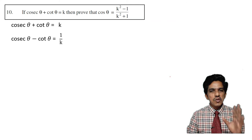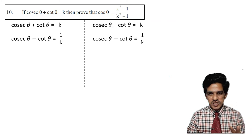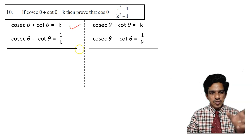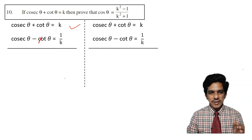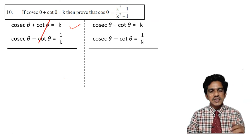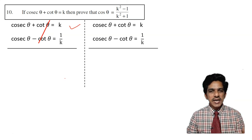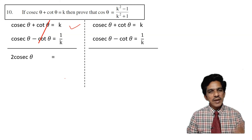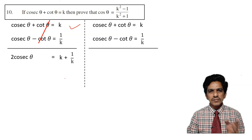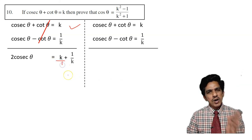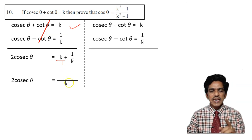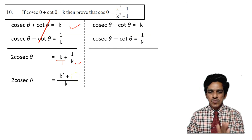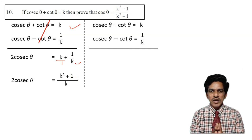We will use these two expressions by adding and subtracting them. When we add the two equations, plus cot theta and minus cot theta cancel, leaving cosecant theta plus cosecant theta, which is 2 cosecant theta. On the right side, k plus 1 by k, taking LCM as k, gives k square plus 1 over k. So 2 cosecant theta equals k square plus 1 divided by k.